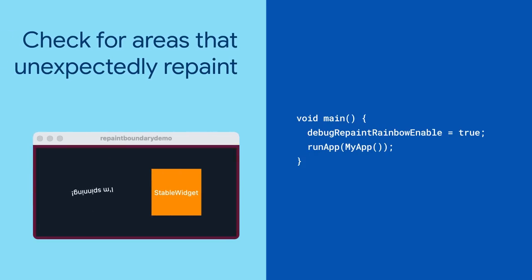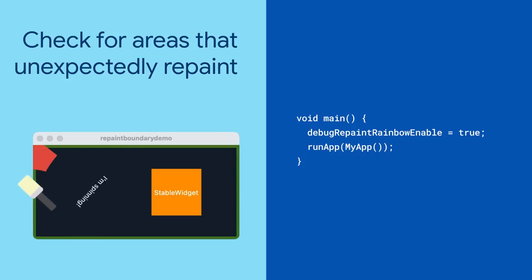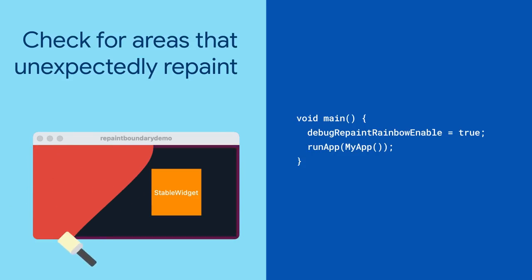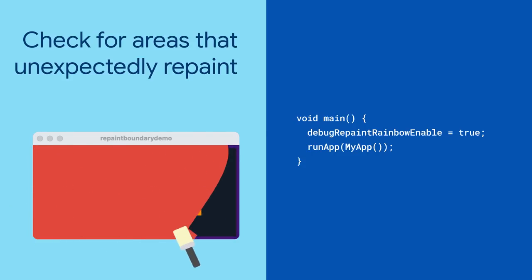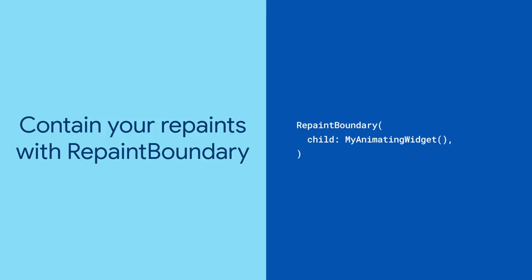Now launch your app and look for which border colors change. If you have an animating widget, of course its region will change colors. But if unrelated regions, or your entire app, are also changing colors, then the little painter inside your Flutter app is probably repainting entire rooms. To fix this, take that animating widget and wrap it in a repaint boundary.